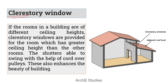Next is the clerestory window. These windows are provided when there is a level difference in the roof — one part is at a higher level and one is at a lower level. The windows are provided in the area left between the two roof levels. The shutters are able to swing with the help of a cord over a pulley, so with the help of that cord you are able to turn the panels. These also enhance the beauty of the building.